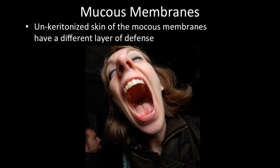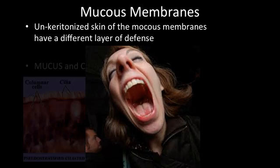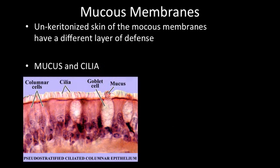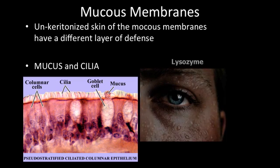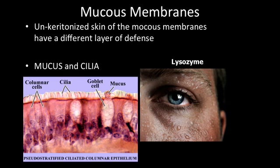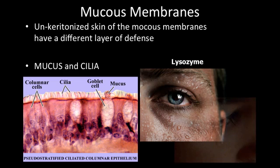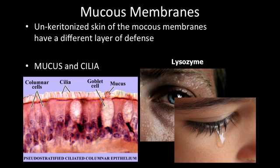Mucus secreted by mucus membranes traps pathogens like flypaper. Your mucus membranes line your mouth, respiratory, and digestive tracts. In your respiratory system, cilia can help sweep dirty mucus out of the body. Saliva and tears have a destructive enzyme called lysozyme, which is another chemical warfare protection. Lysozyme is an enzyme that breaks down proteins.